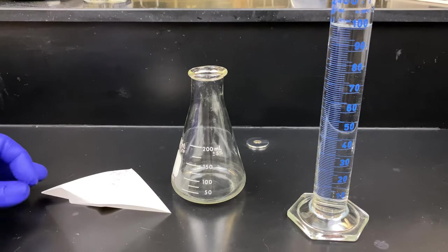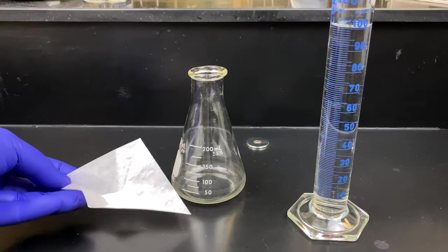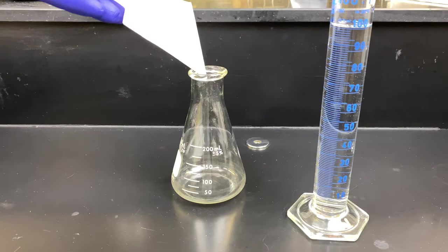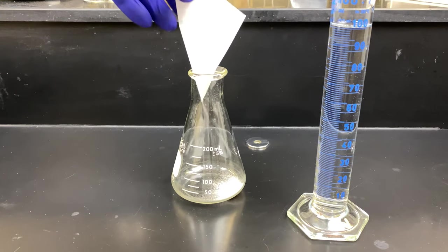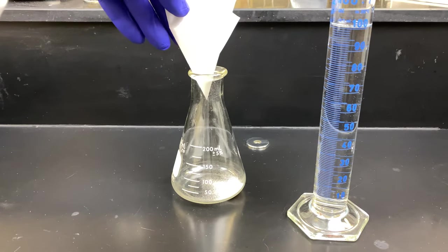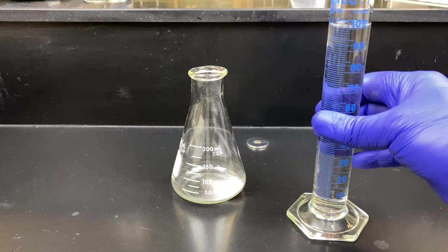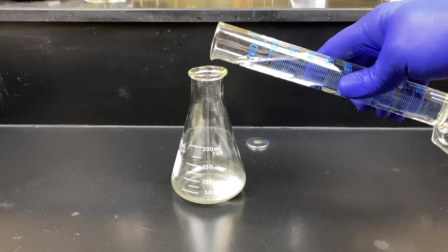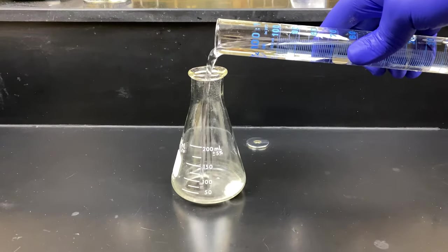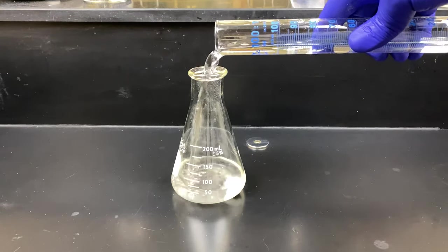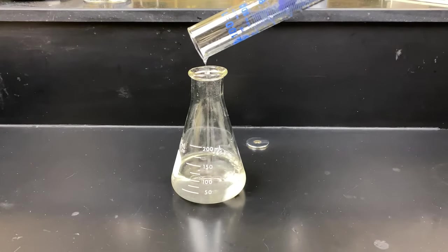We're going to make a 0.8% agarose gel. I've weighed out 0.8 grams of agarose. I place it into the Erlenmeyer flask, and here I have 100 mils of 1x TAE. We're going to add that in. Make sure you don't use water. That will not work. Also, oftentimes there's 10x TAE in the lab. Make sure you're using 1x TAE.